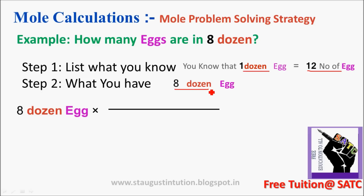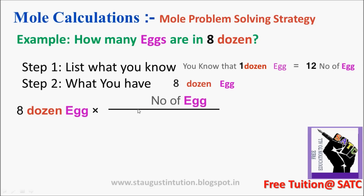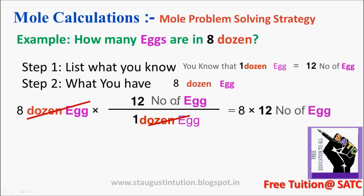Step 2 is what you have. Step 3: we will go to a dozen egg — we will convert to number of eggs. We cancel the dozen egg unit. The number of eggs divided by a dozen eggs — we cancel the dozen unit. If we cancel it, the dozen cancels and we are left with number of eggs. This is the trick — we will do the unit cancellation.